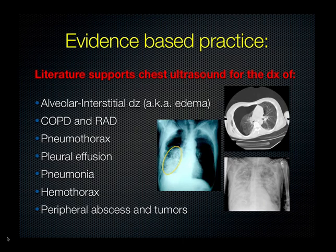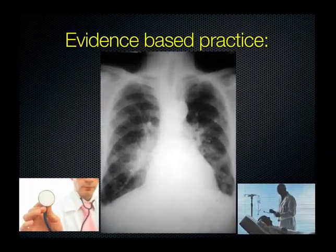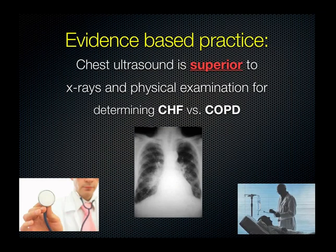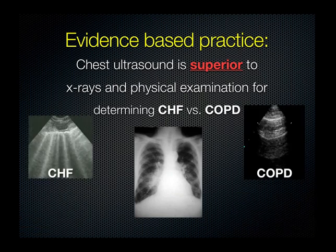Looking at the evidence, there is strong support for the use of chest ultrasound for the diagnosis of many conditions including pneumothorax, pneumonia, and ARDS. For example, chest ultrasound has been shown to be superior to x-rays and physical examination for differentiating CHF from COPD — often a problem with patients who have a history of both and present short of breath. The days are numbered when we treat dyspnea with a shotgun approach covering both CHF and COPD bases. Now we can scan the chest: predominance of A lines suggests COPD exacerbation, while bilateral B lines suggest pulmonary edema.